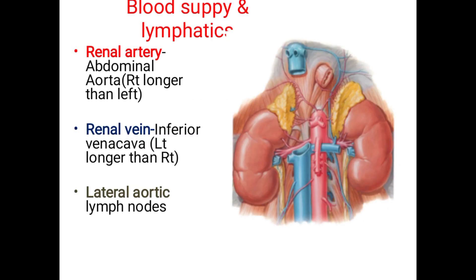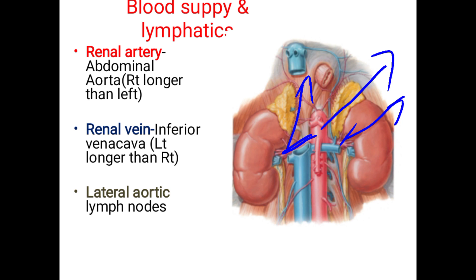The blood supply to the kidney comes from the abdominal aorta via the renal arteries. The abdominal aorta gives right and left renal arteries; the right renal artery is longer than the left. Venous drainage is via the renal veins, which drain into the inferior vena cava.